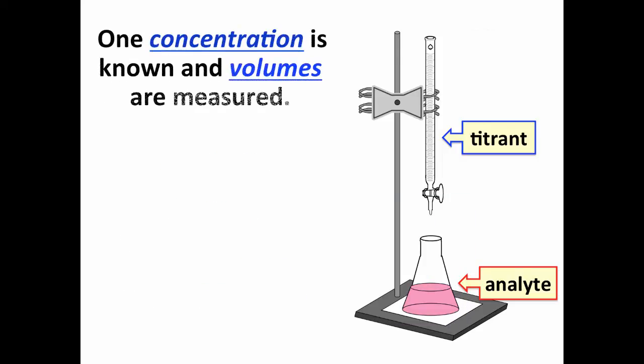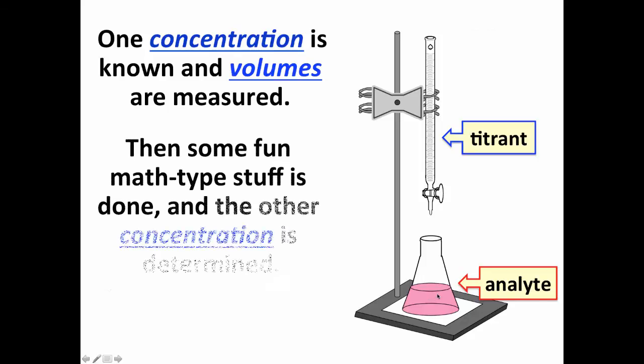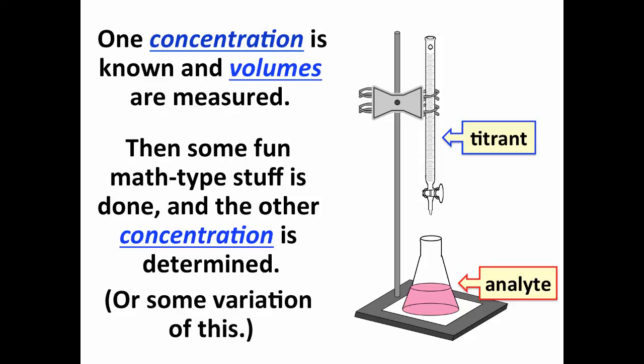Now, when we do a titration, we typically know one concentration and measure two volumes. So an example would be we know our volume of analyte. We don't know its concentration. We know our concentration of titrant. And then we add a known volume or measured volume to get to our endpoint where the color has changed. And then that allows us to determine the concentration of the unknown substance, the analyte.